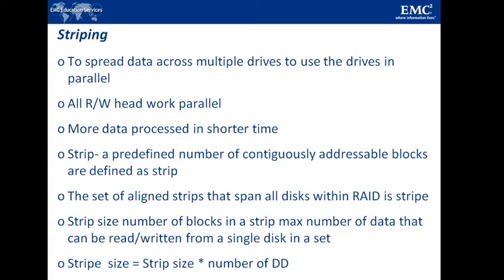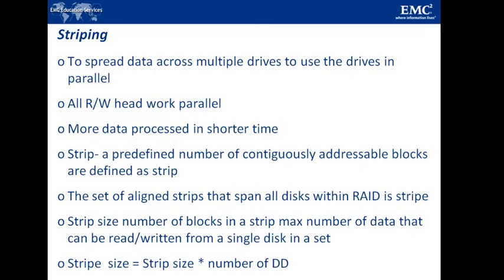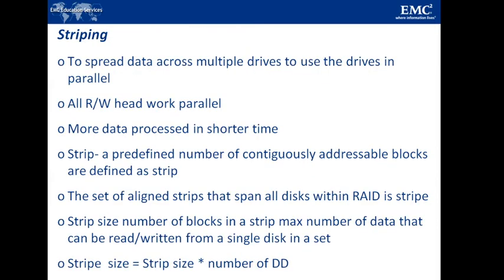The figure shows the physical and logical representation of a striped RAID set. Strip size, also called Stripe Depth, describes the number of blocks in a strip and the maximum amount of data that can be written to or read from a single disk in the set. All strips in a stripe have the same number of blocks. A smaller strip size means data is broken into smaller pieces spread across the disks. Stripe size is a multiple of strip size by the number of data disks in the RAID. For example, in a 5-disk striped RAID set with a strip size of 64 KB, the stripe size will be 320 KB (64 KB × 5).